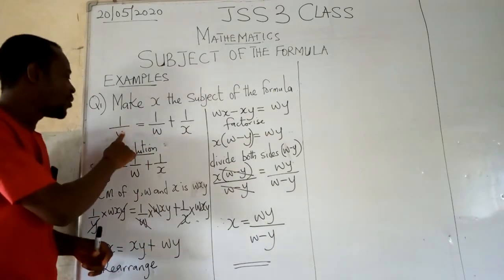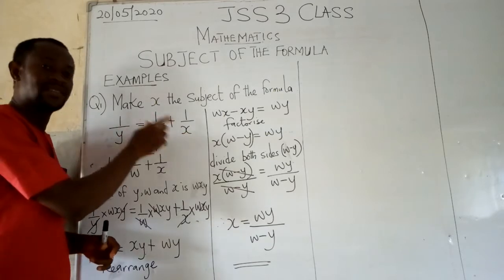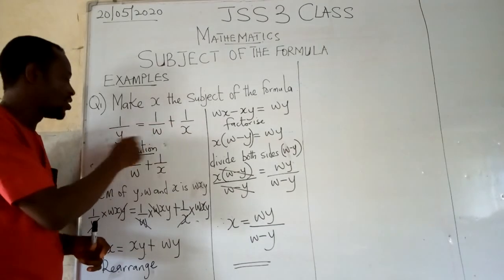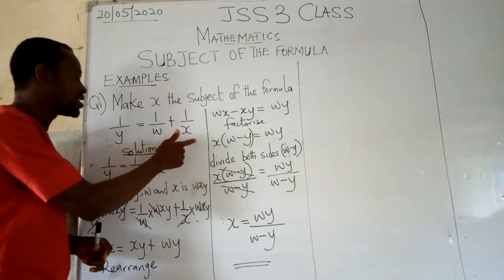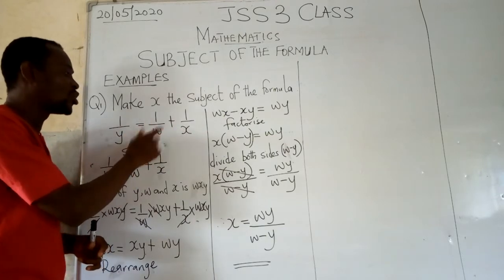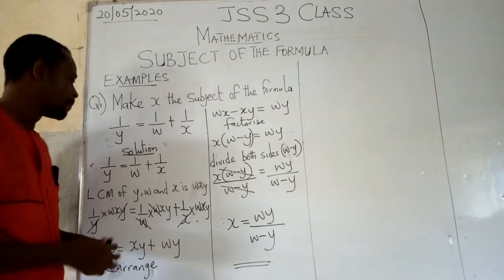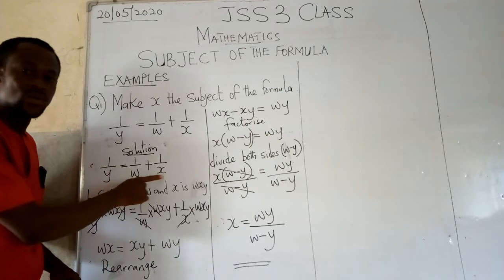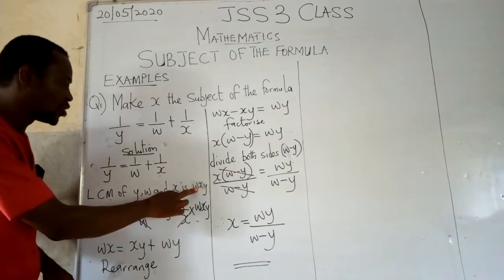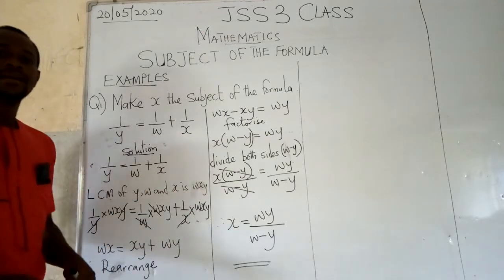The LCM of y, w and x is the same thing that we have here. You can call it as y, w and x, or x, y, w or w x, y as the case may be. So that is why we said the LCM of y, w and x is w x y.